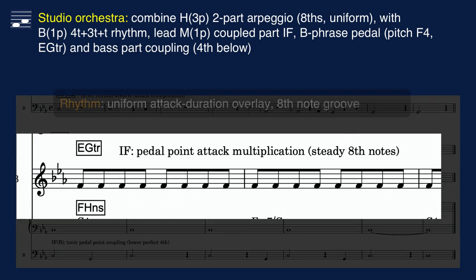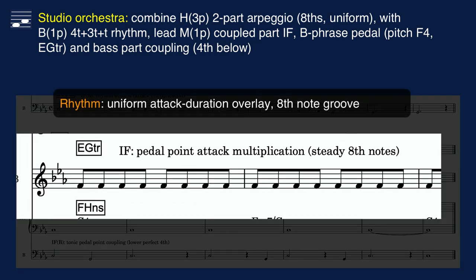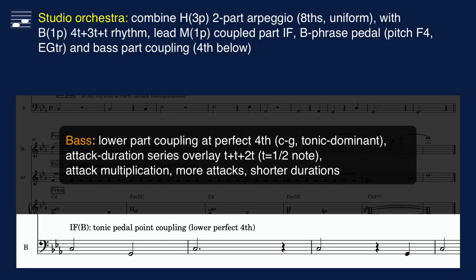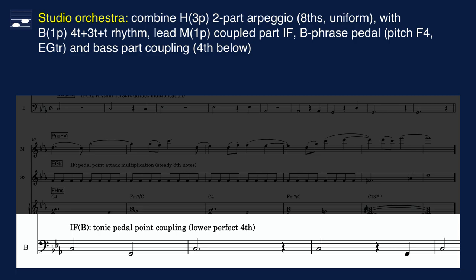The B-phrase not only has a tonic pedal point, but also a constant pitch F4. The latter pedal point is played as constant duration eighth notes by electric guitar. The C-pedal point in the bass receives a lower perfect fourth coupling, thus alternating between tonic and dominant. The rhythmical time unit now is the half note.